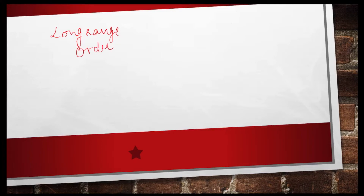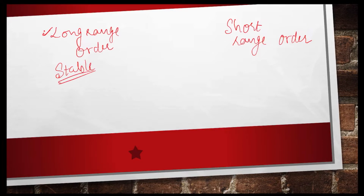Welcome back to the chapter Solid State. In the last class we talked about the classification of solids into two major categories: crystalline solids and amorphous solids. The basic difference between them is long range order of particles in crystalline solids and short range order in amorphous solids. Because of this long range order, crystalline solids are more stable, while amorphous solids are comparatively unstable.